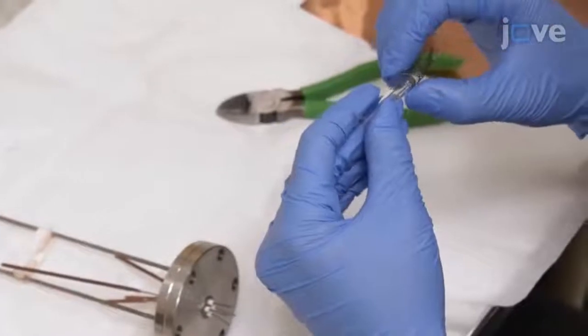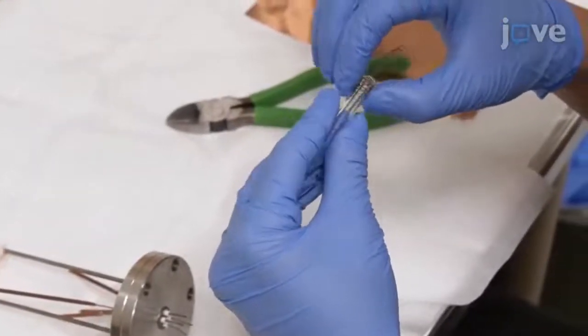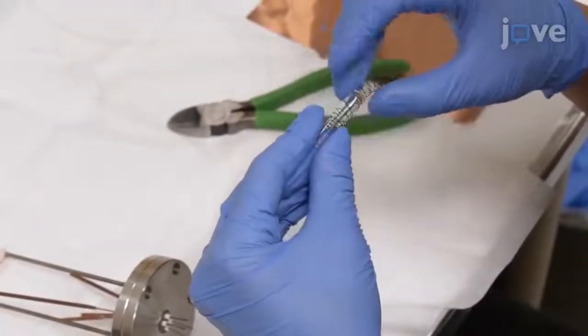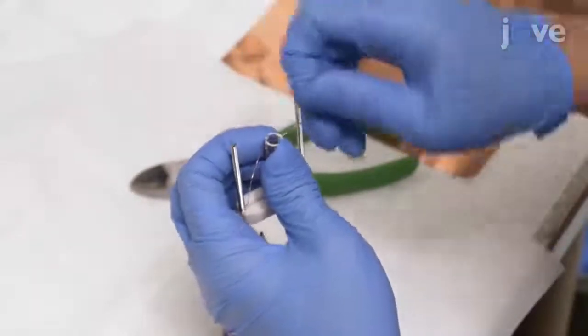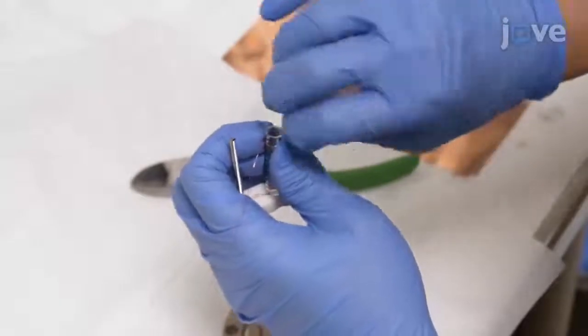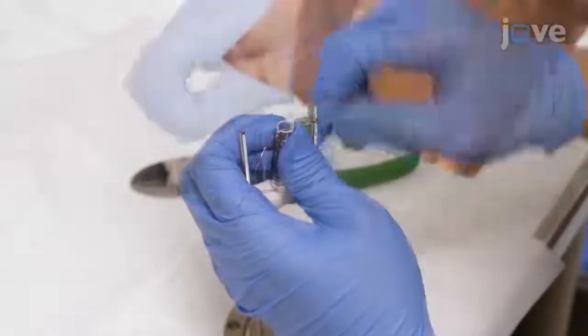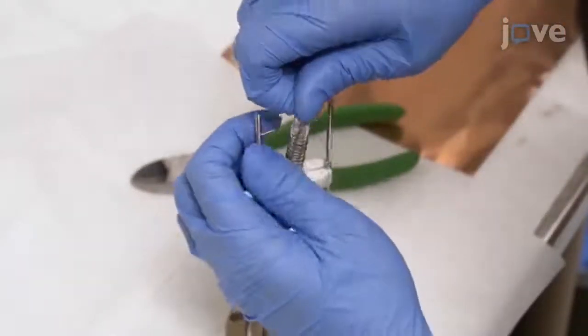Then slide a quartz glass tube into a tungsten wire spring with lengths of tungsten wire at the top and bottom. Fit the bottom of the glass tube into the matching hole in the ceramic piece. Fix the glass tube in place by securing the top between the support rods with soft copper wire.